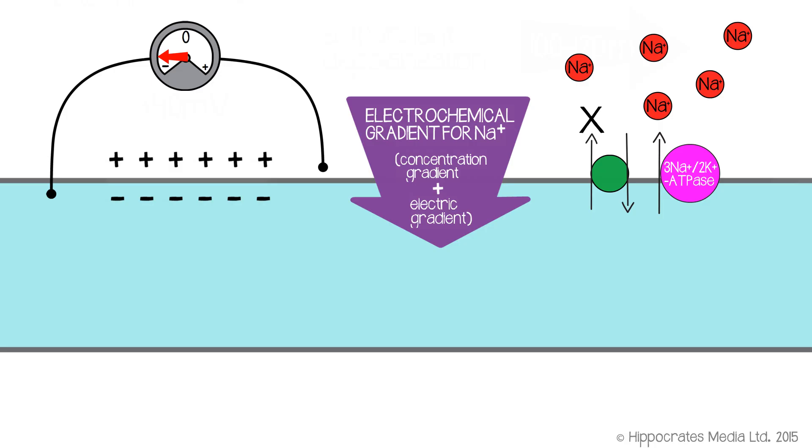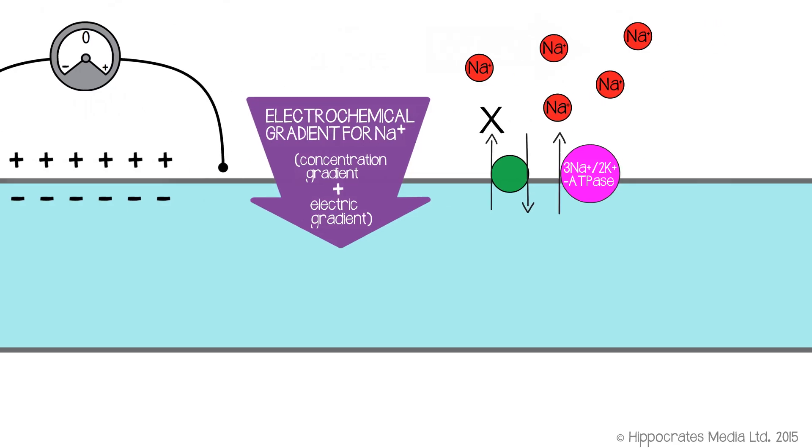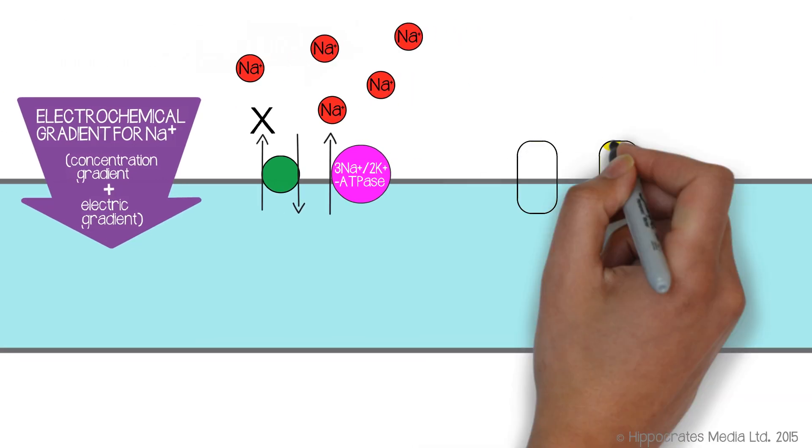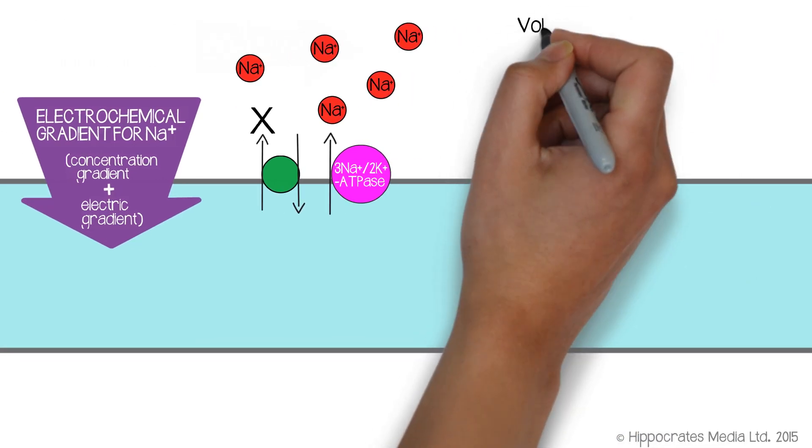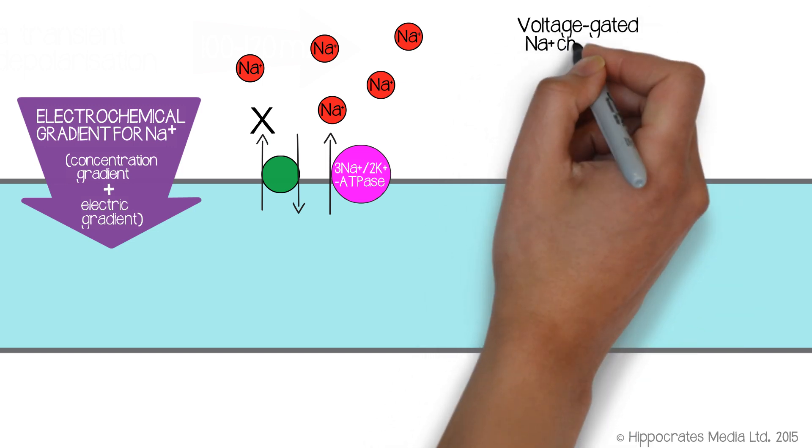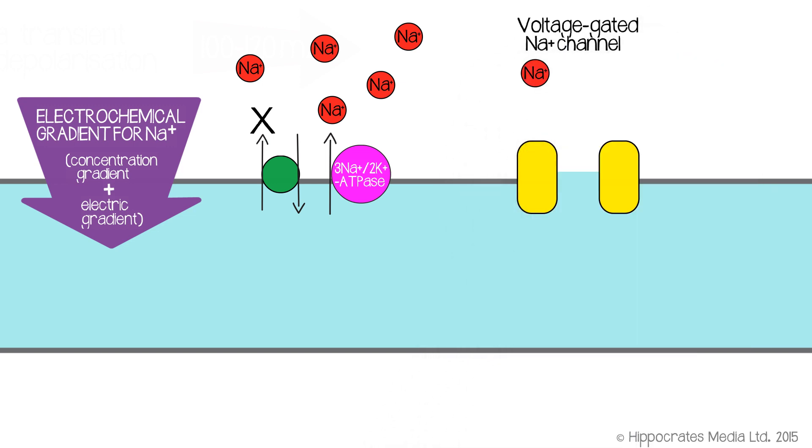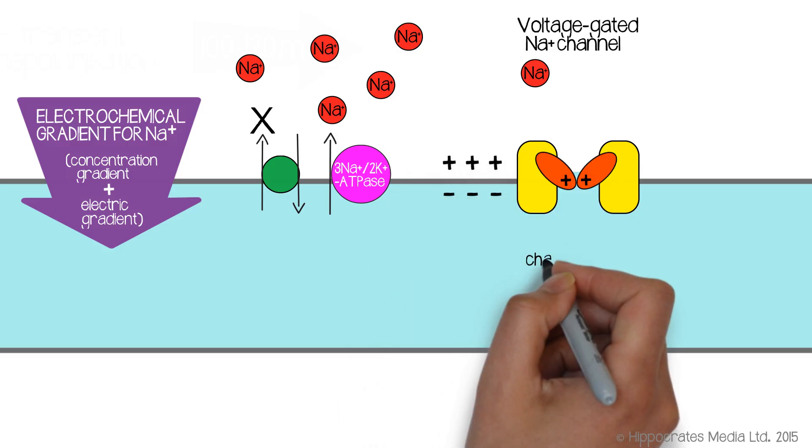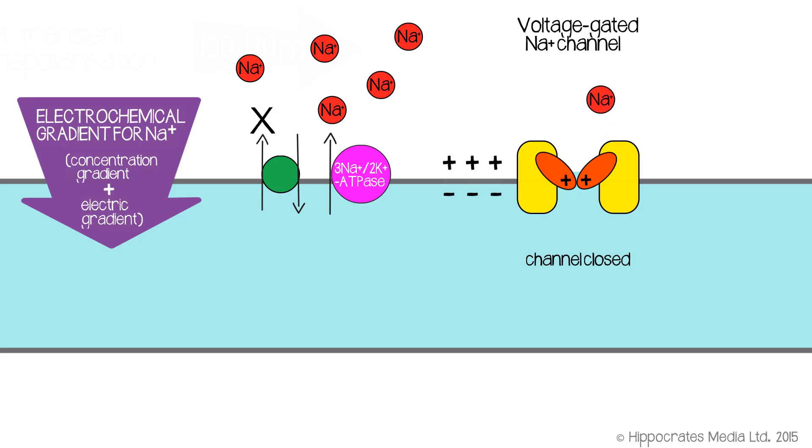But within the membrane of a nerve cell, and in fact within the membrane of muscle cells as well, we have a special type of protein called a voltage-gated sodium channel. And it's the presence of those voltage-gated sodium channels that make nerve and muscle excitable. We call them excitable cells.